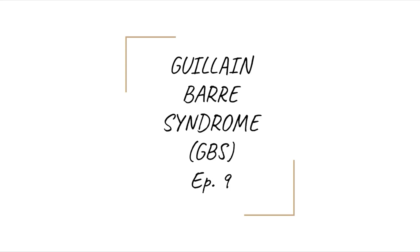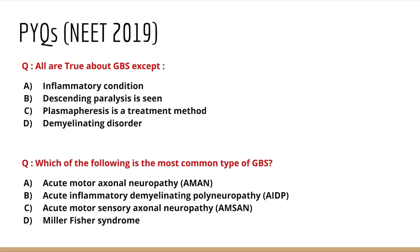Welcome back to episode 9 of the Medicine PYQ Topic Series. The topic is GBS. The PYQ questions from 2019 are: number one, all are true about GBS except — inflammatory condition, descending paralysis is seen, plasmapheresis is a treatment method, and it's a demyelinating disorder. Second question: which of the following is the most common type of GBS — AMAN, AIDP, AMSAN, or Miller Fisher Syndrome?